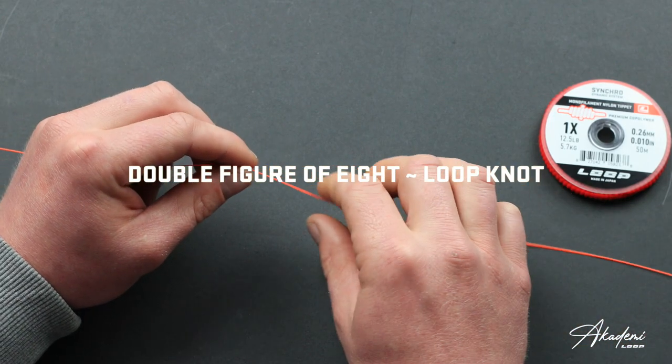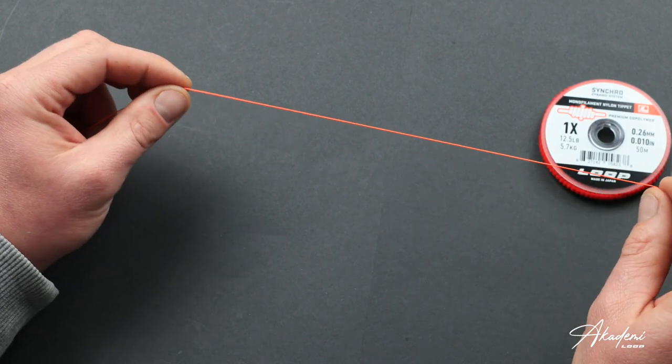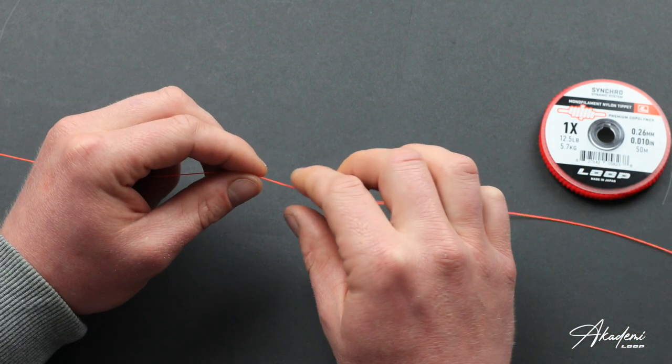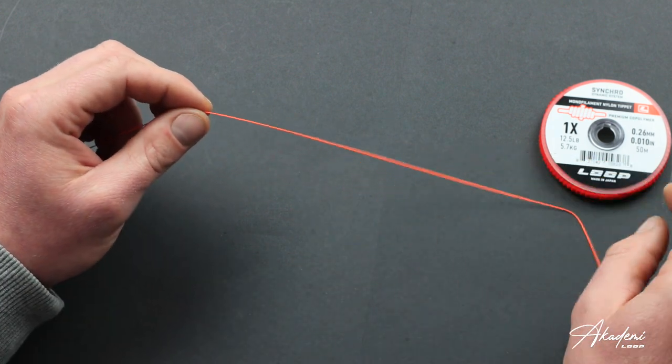In this episode I'm going to show you how to make a very simple loop knot using the figure of eight. Really handy for tying a loop in the end of your leader for attaching to the fly line.